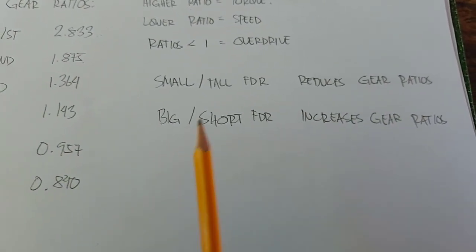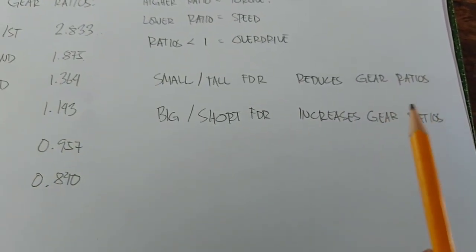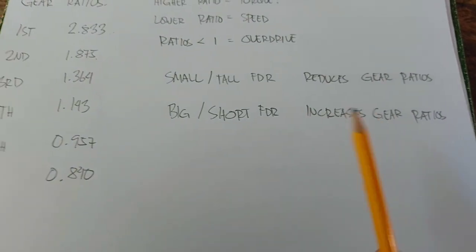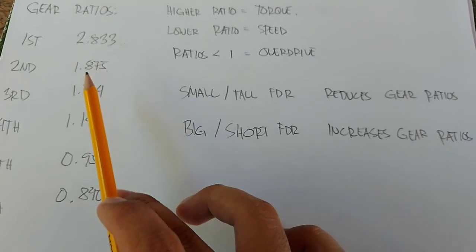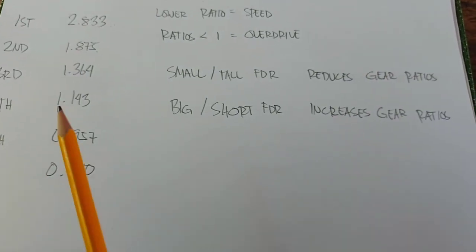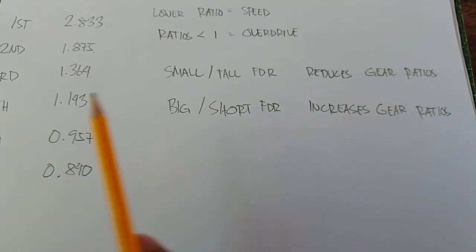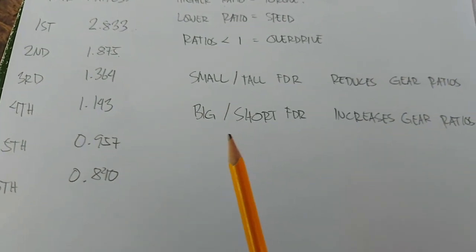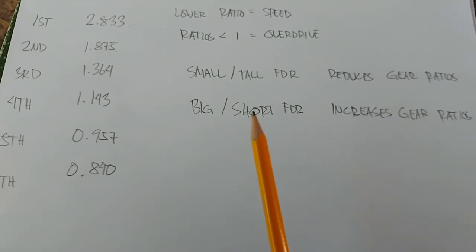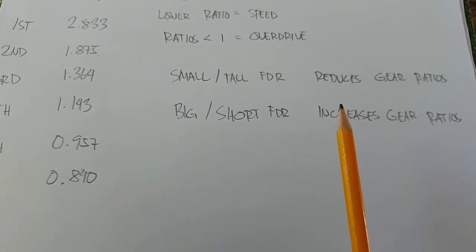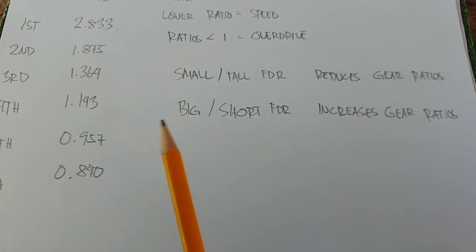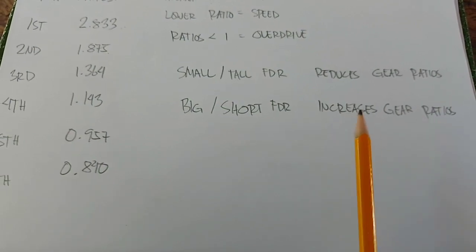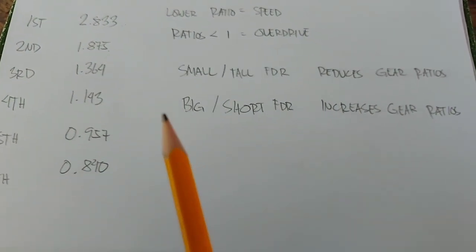For big final drive ratios or short gearing, you accelerate faster because the intervals between shifts become smaller. This means you accelerate harder. And if you're on a trail, it's easier to induce wheel spin to get power slides if you need to turn your motorcycle using the throttle.